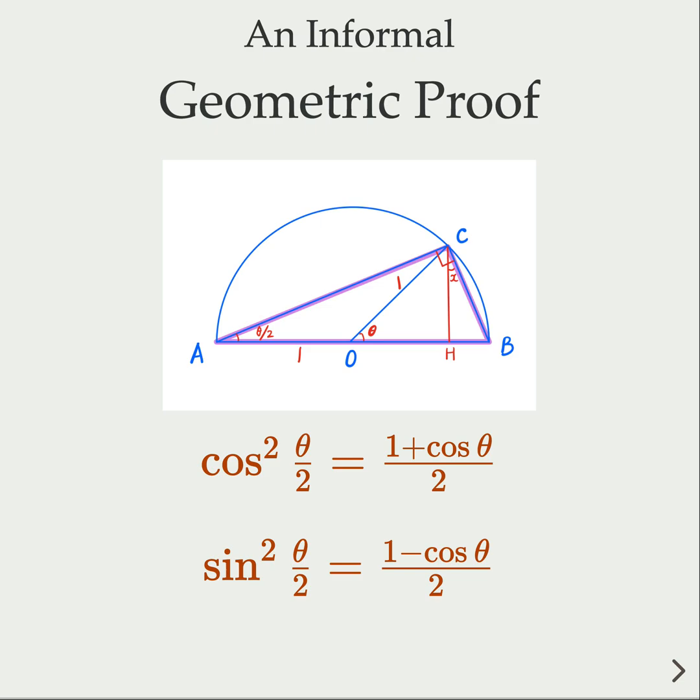We give an informal geometric proof for what is called the half-angle formula for sine and cosine. This is a very commonly used trig identity.